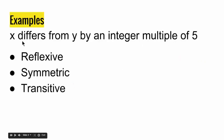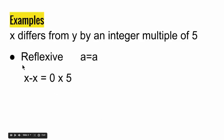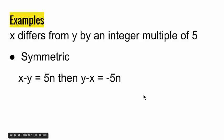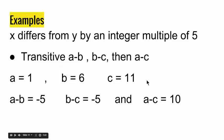Another example: X differs from Y by an integer multiple of 5, meaning X minus Y equals 5N where N is an integer. This is an equivalence relation. It is reflexive because A minus A equals 0, which is 5 times 0. It is symmetric because if X minus Y equals 5N, then Y minus X equals negative 5N, which is still an integer multiple of 5. It is also transitive: if A minus B equals 5N and B minus C equals 5N, then A minus C equals 5N where N is an integer.